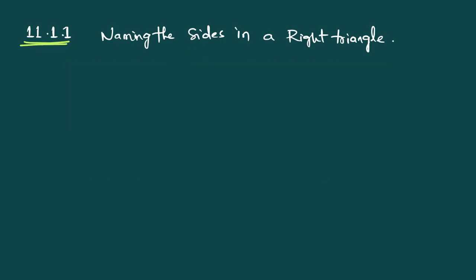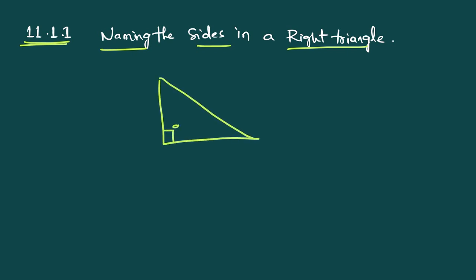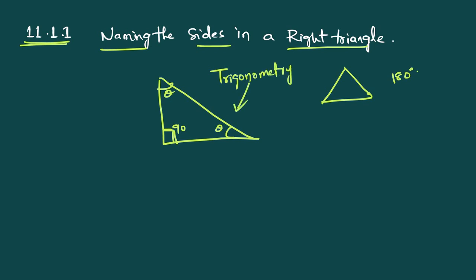The first topic is 11.1.1: naming the sides in the right angle triangle. A right triangle has a 90-degree angle, and the total value of all angles in a triangle is 180 degrees. The entire trigonometry chapter is based on the right angle triangle.